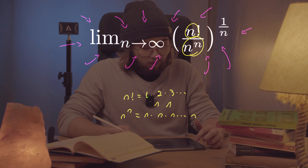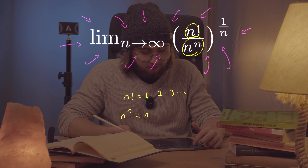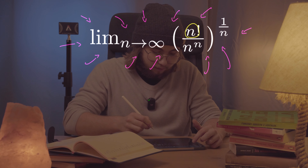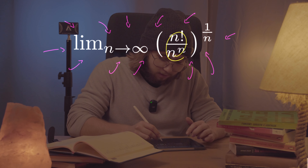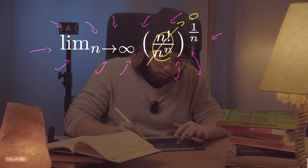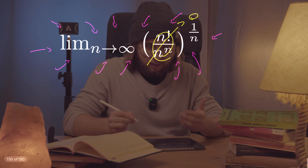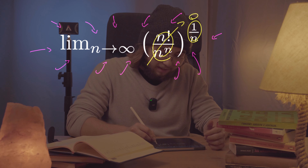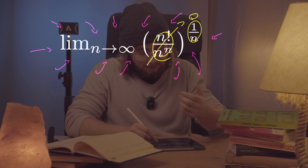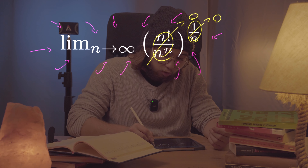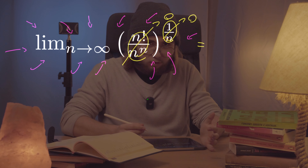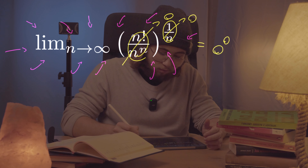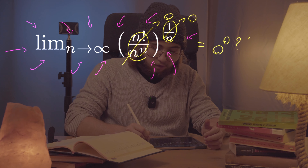So the fraction itself is going to be approaching zero. However, as n approaches infinity, the one over n in the exponent also approaches zero. So what we actually approach here is a situation of zero to the power of zero.